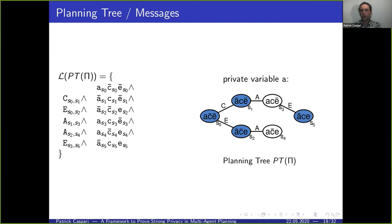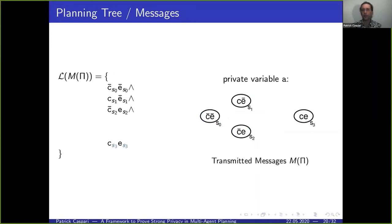If variable a is private and we only transmit the highlighted states, we can do exactly the same thing to express the messages as a logic formula, just by putting the corresponding propositions into a conjunction.